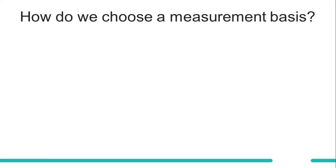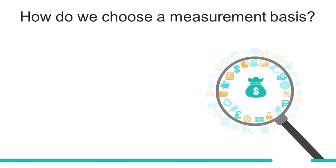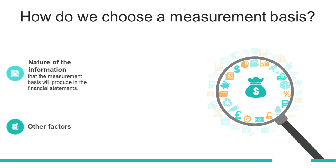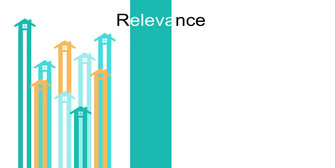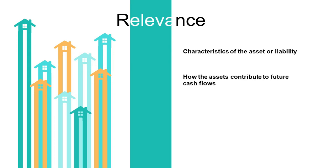Now that we know what the measurement bases are, the next question is: what factors do we consider in choosing a measurement basis? According to the framework, we consider the nature of the information that the measurement basis will produce in the financial statements, as well as other factors. This means going back to our fundamental qualitative characteristics of relevance and faithful representation, as well as the enhancing characteristics of comparability, verifiability, timeliness, and understandability. For relevance, the relevance of the information is affected by the characteristics of the asset or liability and how it contributes to future cash flows. For example, when an asset is highly sensitive to market price changes — such as a derivative — current value measurements may be more appropriate than historical cost.